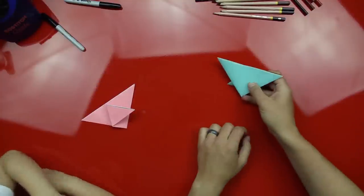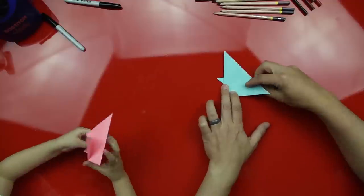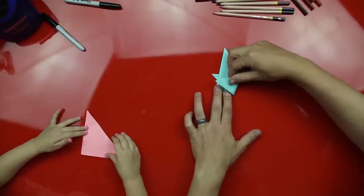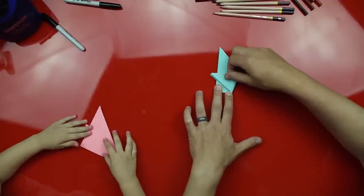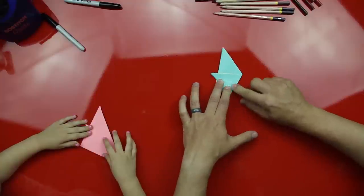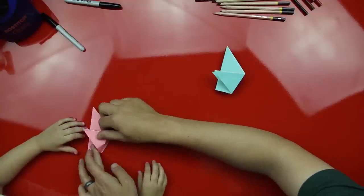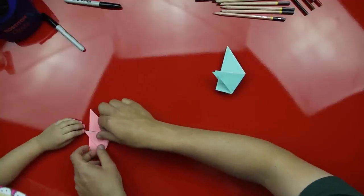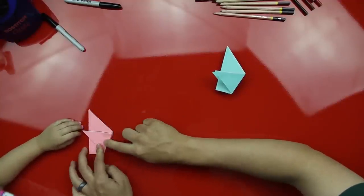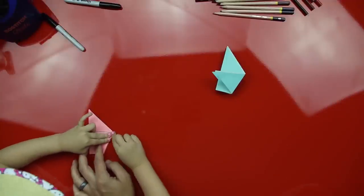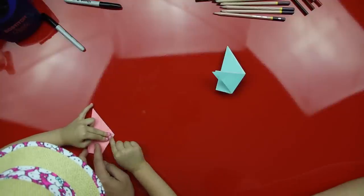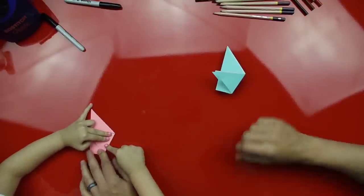Now flip it over. Flip your whole piece of paper over and then we're gonna fold the other side so it matches and they touch points. Okay, so we're gonna fold this over so that this point touches that other point. Can you do that? Good job.